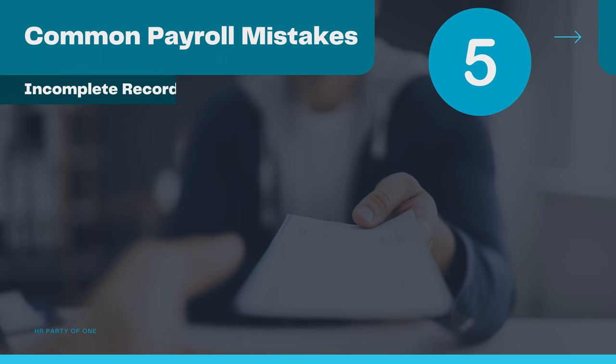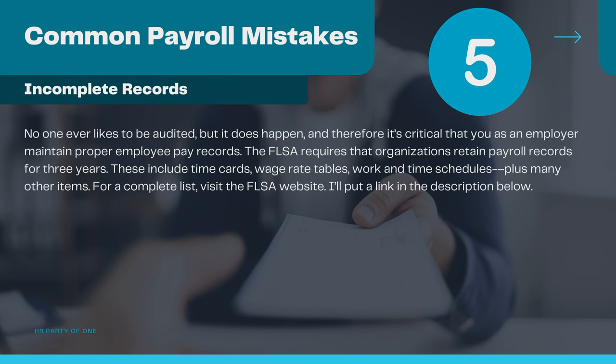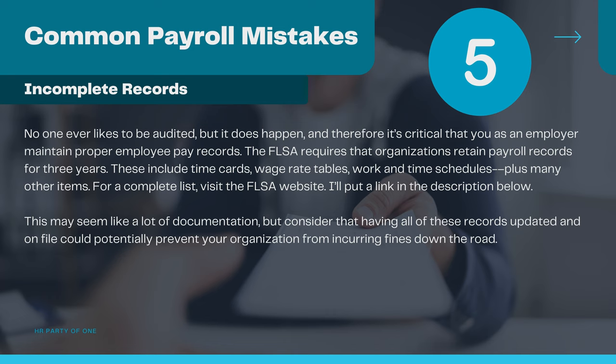And finally, number five: incomplete records. No one likes to be audited, but it does happen and therefore it's critical that you as an employer maintain proper employee pay records. The FLSA requires that organizations retain payroll records for three years. These include time cards, wage rate tables, work and time schedules, plus many other items. For a complete list, visit the FLSA website — I'll put a link in the description below. This may seem like a lot of documentation, but consider that having all these records updated and on file could potentially prevent your organization from incurring fines down the road.